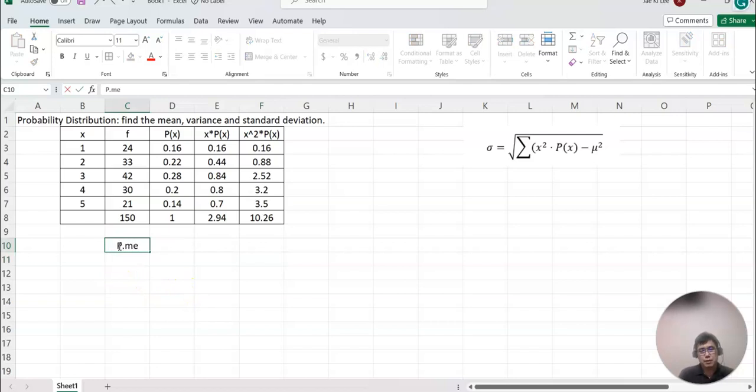Population mean - this means basically this value. The reason is, using the frequency distribution, we divide x times P(x), the total of the x times P(x) column, divided by total frequency.